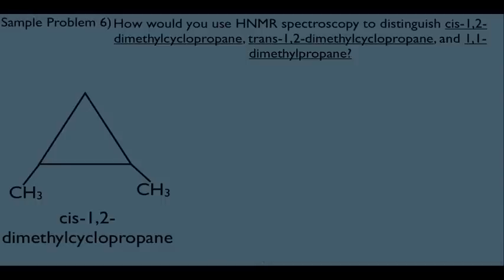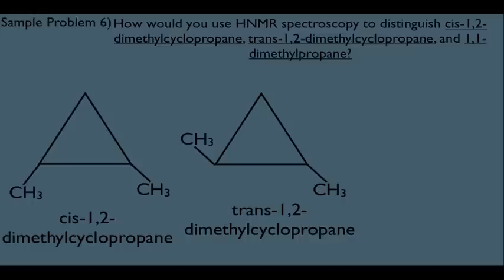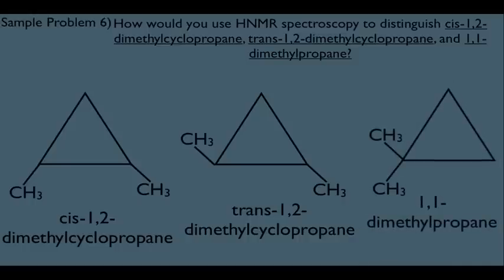Now let's look at a harder example. How would you use HNMR spectroscopy to distinguish cis-1,2-dimethylcyclopropane, trans-1,2-dimethylcyclopropane, and 1,1-dimethylcyclopropane? Think about why we need to distinguish these: if we ran each molecule in the mass spec, it would report the same data for all three — they have the same molecular weight and molecular formula. Similarly, the IR machine would give the same data for all three. So it's really only the NMR machine that's going to help us distinguish between these three.